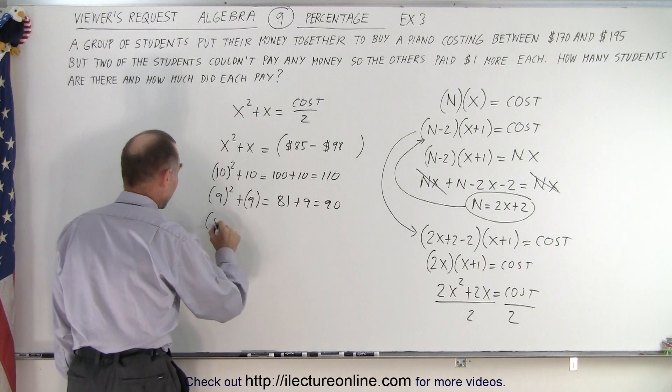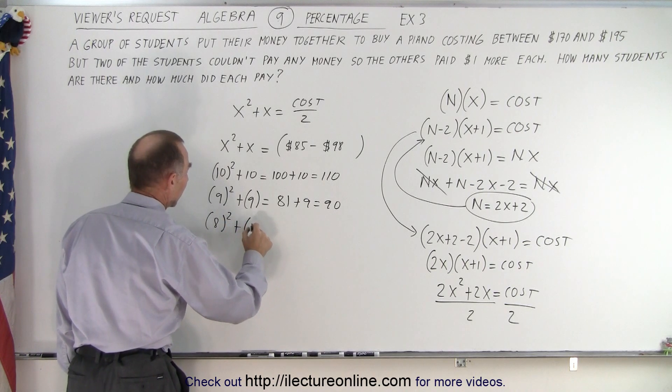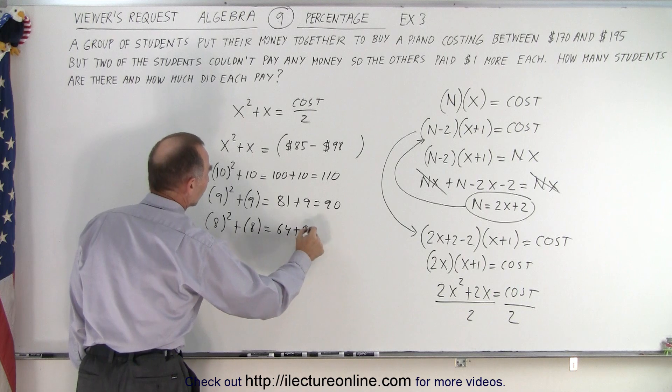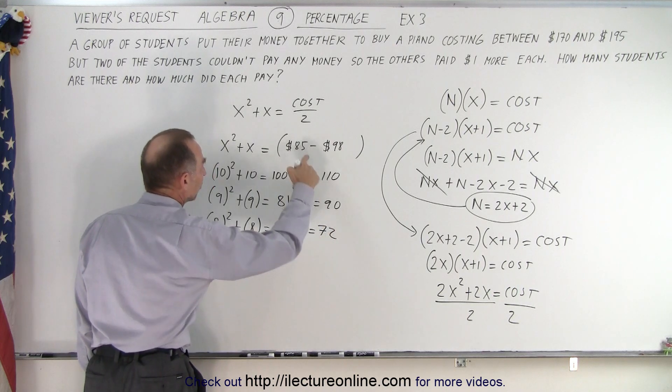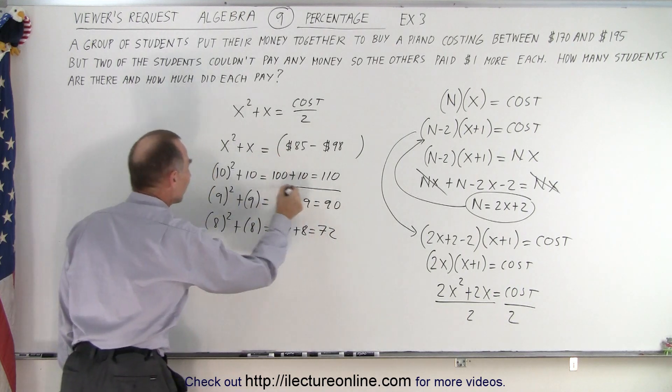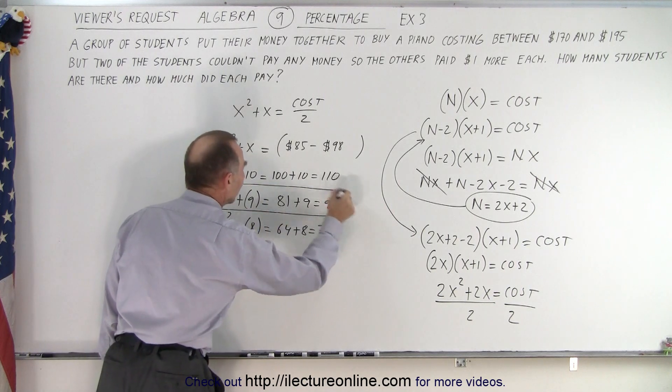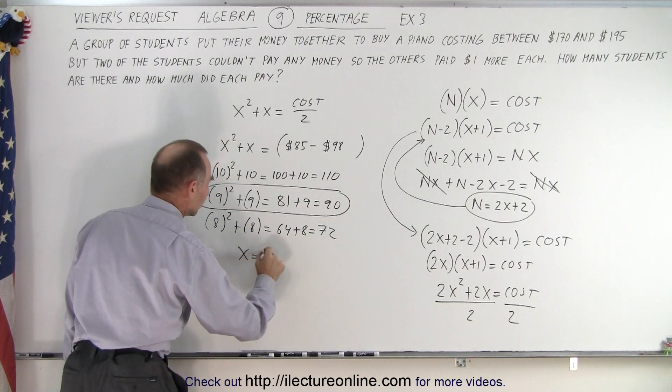And what about 8? 8² + 8. Well, that's 64 + 8 which is 72, that falls below the range. So the only value that makes sense is when x is equal to 9.